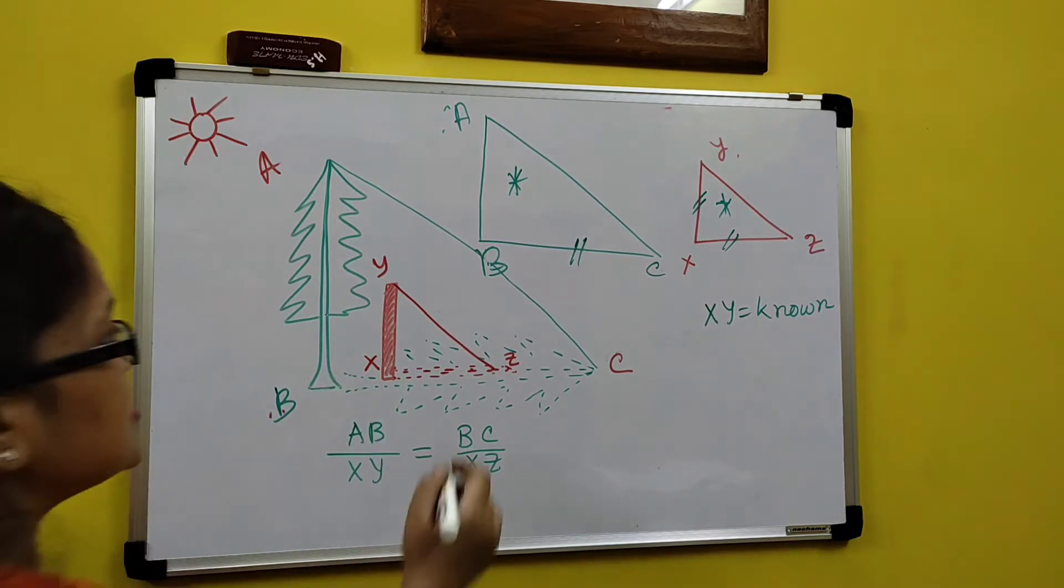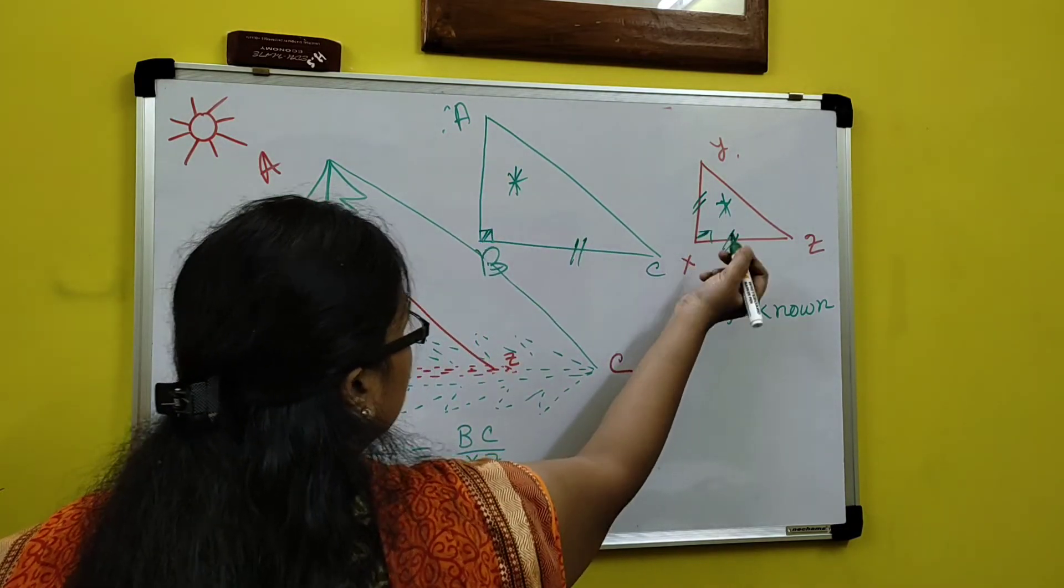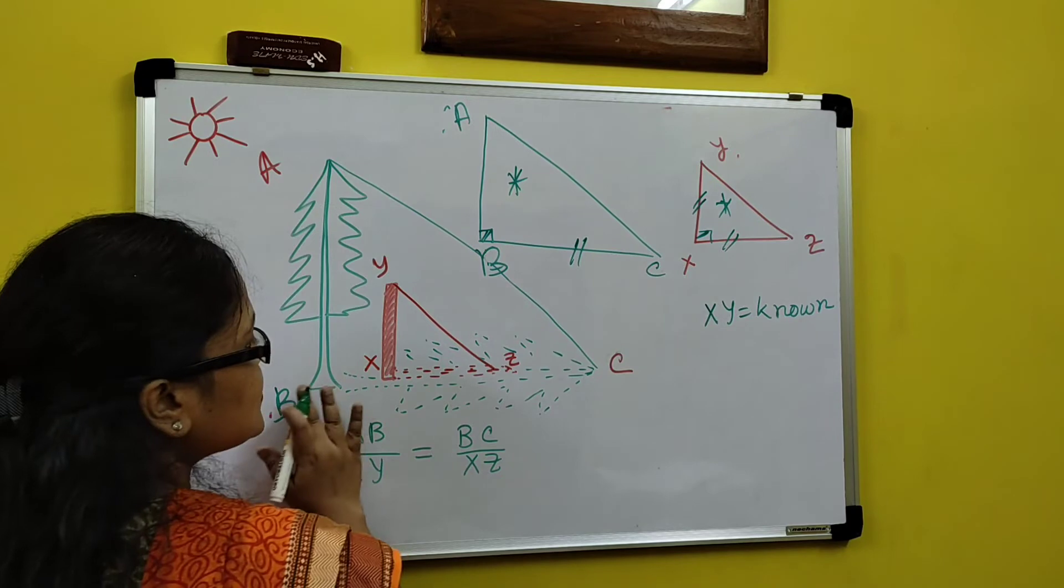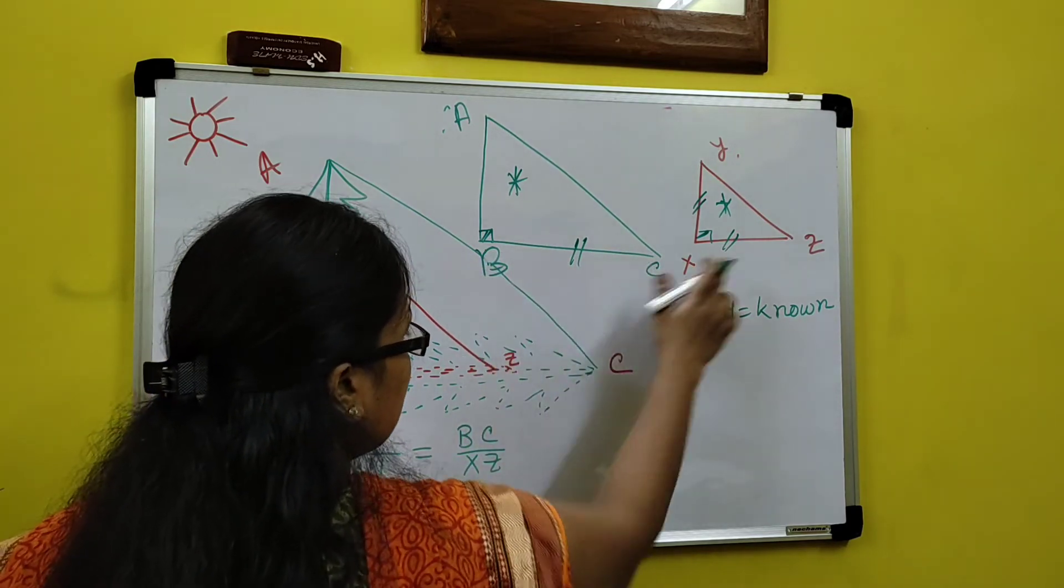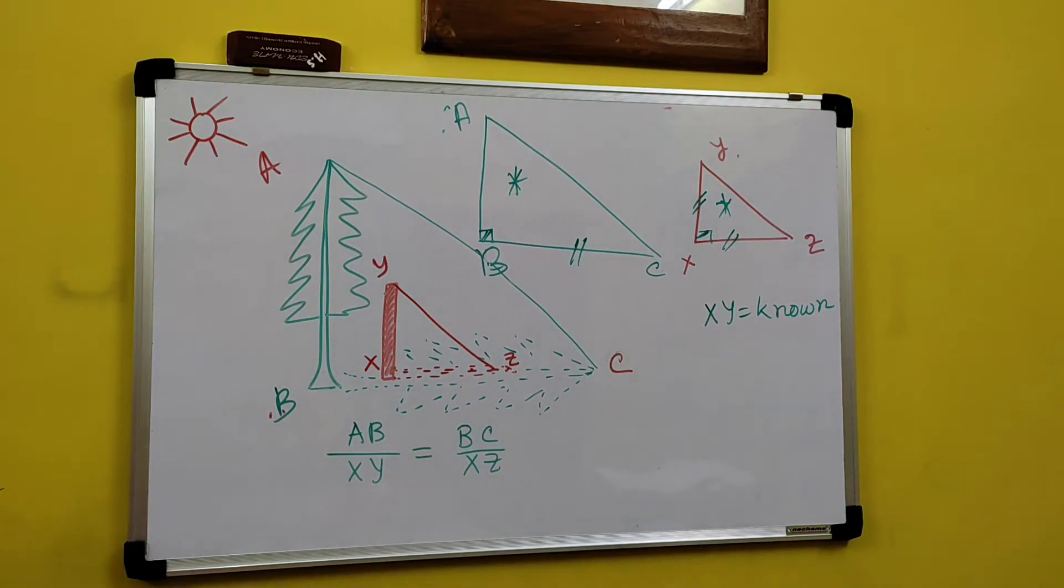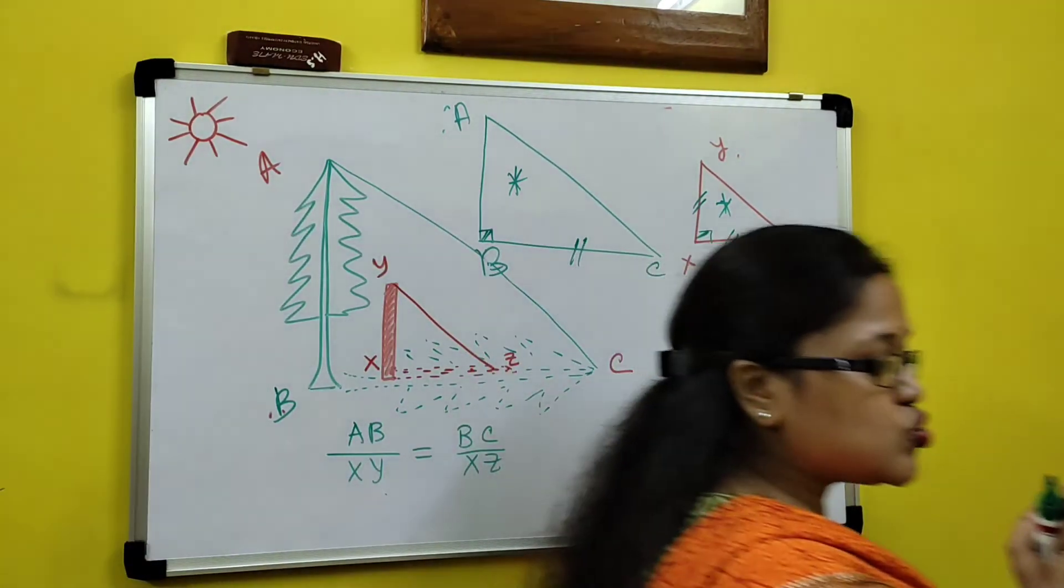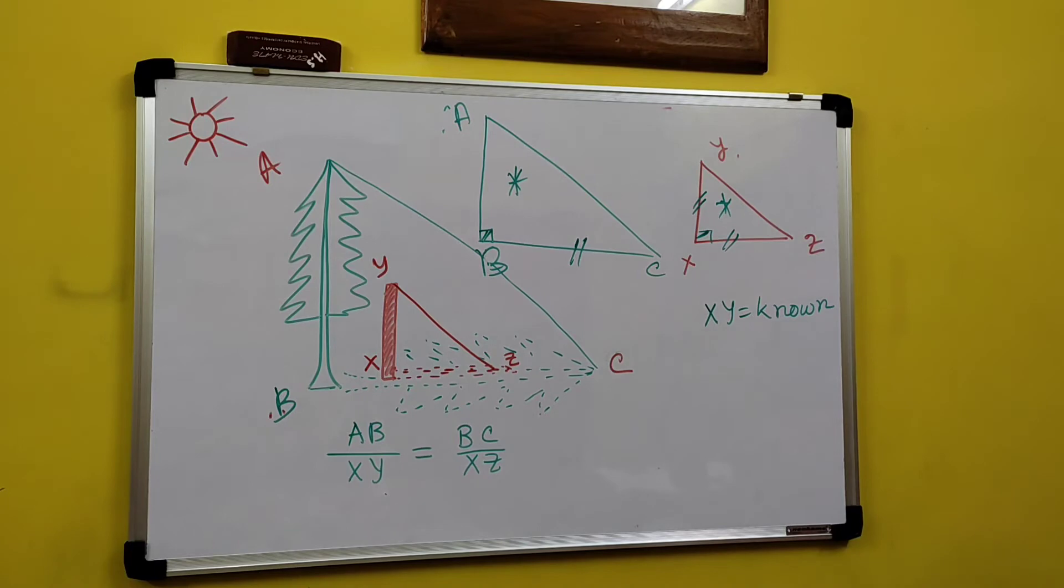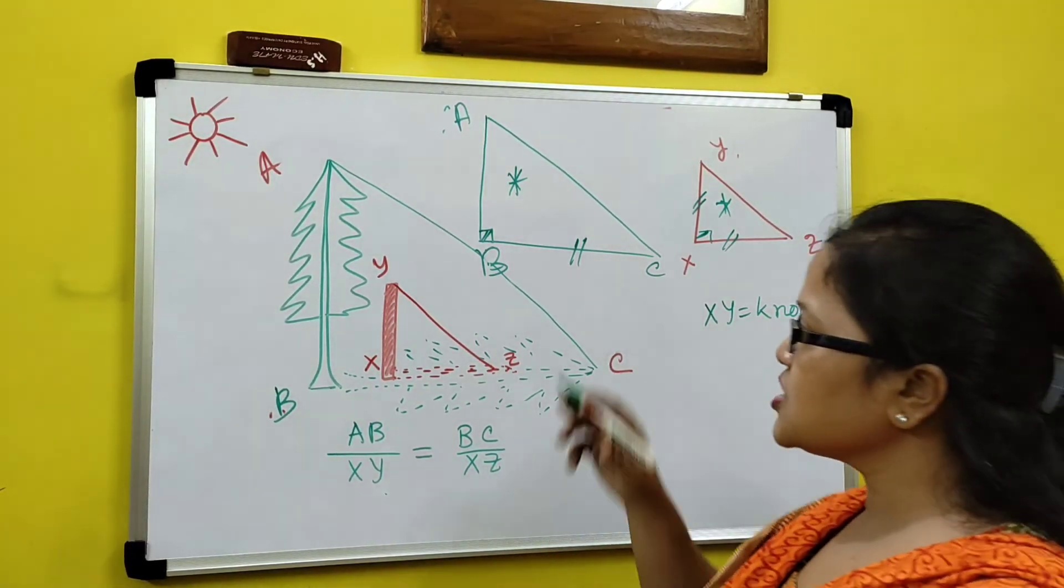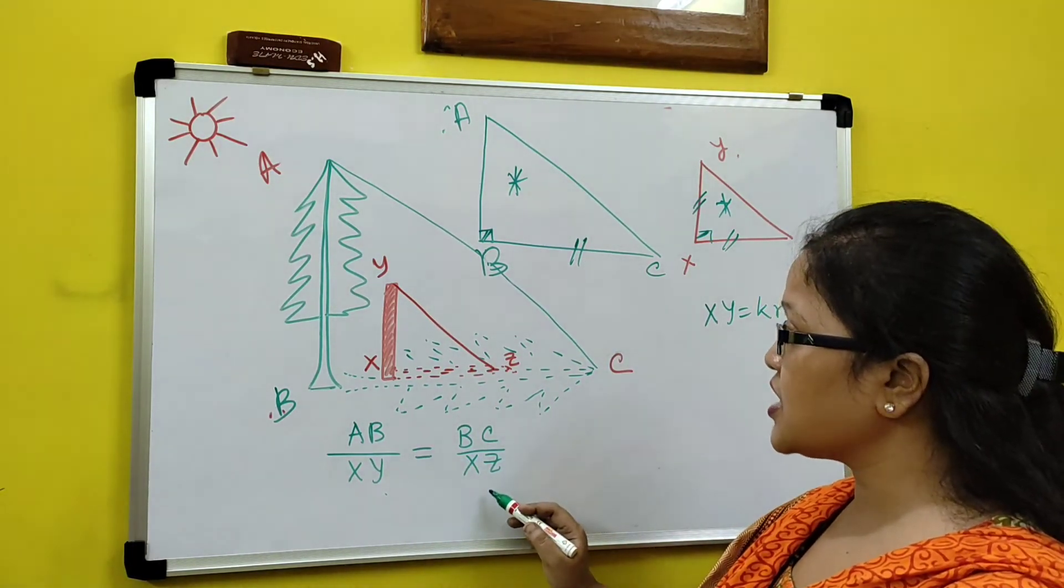Now remember that, since this is right angle triangle, this is also right angle triangle, they are perpendicular and they are standing on the same ground. Means that BC and XJ standing on the same base. So these two triangles are similar. You just for now remember that. Why? No one will ask, because this is physics, not mathematics. So you just directly write, since these two triangles are similar.